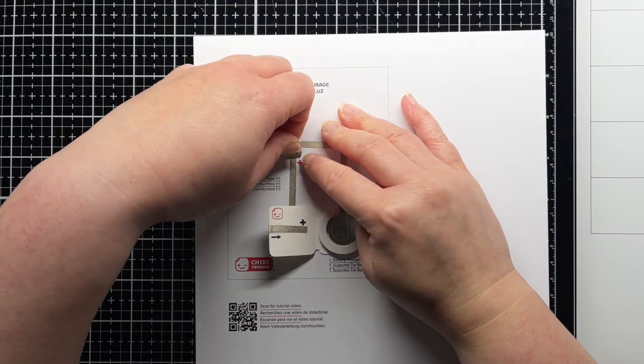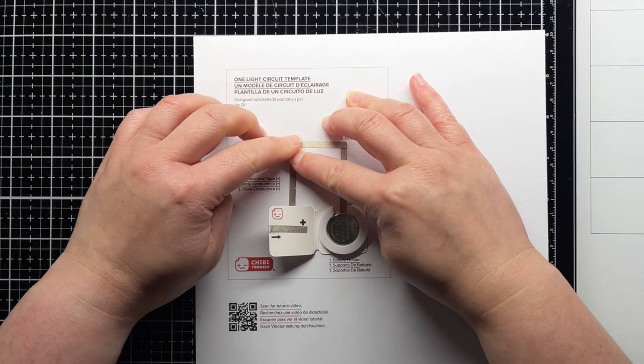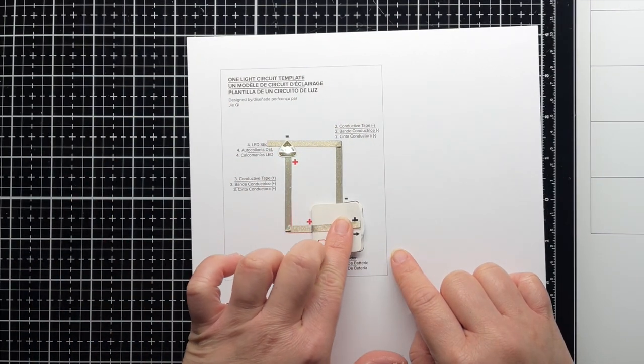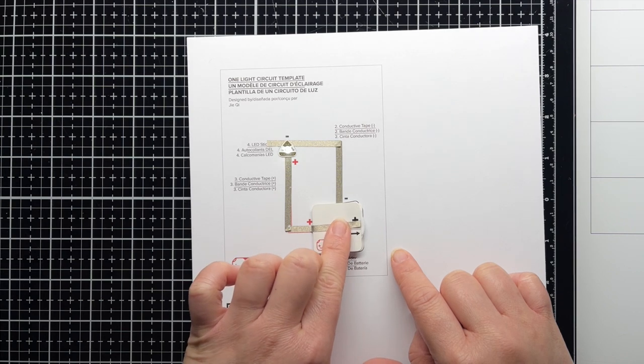Finally, you'll use the printed outline as a guide to adhere your LED sticker to the template, ensuring that the longer positive side is on the bottom, and the shorter negative point is on top and the sticker covers both pieces of tape.